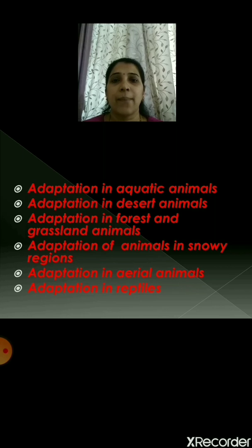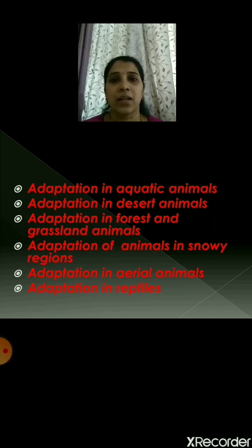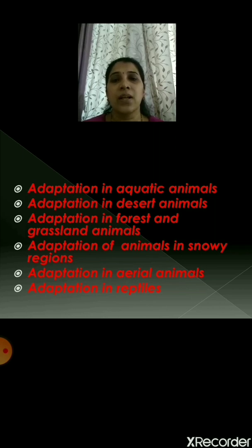Then we took the adaptation in forest and grassland animals, categorizing them as herbivorous and carnivorous. Carnivorous animals like lion and tiger have sharp canine teeth which are sharp and pointed. They have strong legs because of which they can run very fast and capture their prey easily. Their eyes are located on the forehead, and because of this they can spot their prey from a long distance.